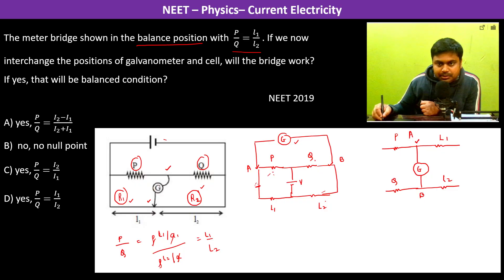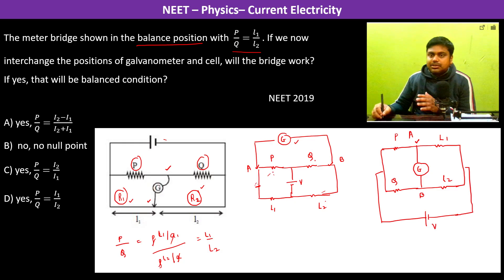Between P and Q there is the positive terminal of the battery and between L1 and L2 is the negative terminal of the battery. So we have rearranged it and now if you see in the rearrangement the situation comes similar to that of a Wheatstone bridge again.